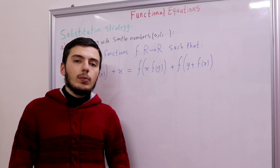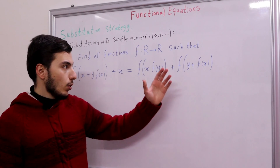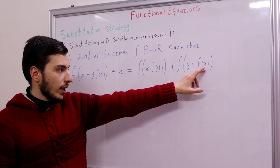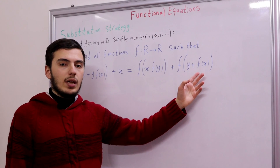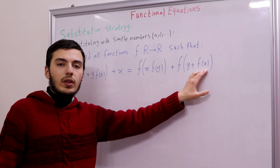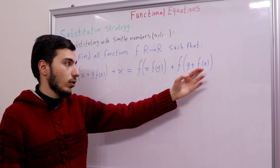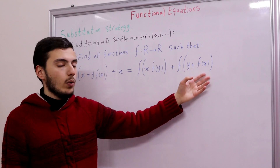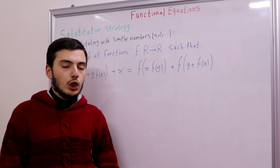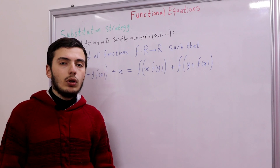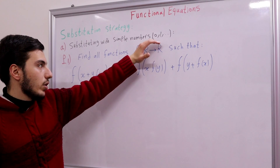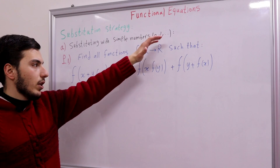The first technique we'll be looking at is the substitution strategy. By substituting we mean replacing a variable — for example x or y — with a number, for example 0, 1, -1, -2. We can even substitute with another variable, for example replacing x with y or y with x. The first thing we usually start with when solving a functional equation is substituting with small numbers like 0, 1, -1, -2.